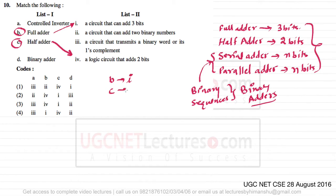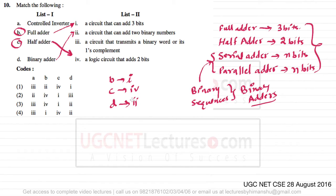For option C (half adder) it is IV because it adds two bits of information. For option D, the binary adder adds two binary numbers, so the matching option is II. That means the remaining option for A is III.